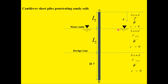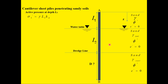We have a groundwater table at depth Z equals L1 from the surface. Since there is a groundwater table on both sides, the hydrostatic pressure will be zero — the hydrostatic pressures on both sides cancel each other. At depth Z equals L1, the lateral earth pressure due to overburden is sigma 1 prime, which equals the unit weight of soil multiplied by L1, multiplied by the active lateral earth pressure coefficient Ka. Until depth L1 plus L2, we only have active lateral earth pressure.